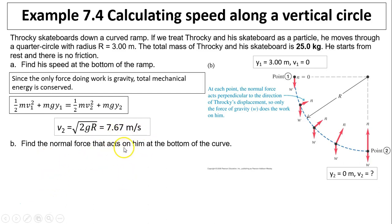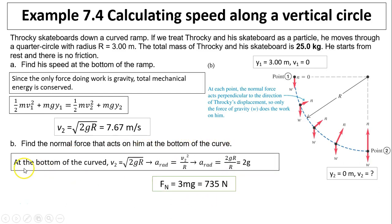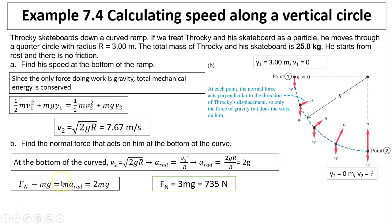Find the normal force acting on him at the bottom of the curve. At the bottom, V2 squared equals 2gR. The centripetal acceleration equals V squared over R, which gives 2g. The net force equals the normal force minus gravity, and that equals M times the centripetal acceleration, which equals 2mg. Solving for the normal force: Fn equals 3mg equals 735 newtons.